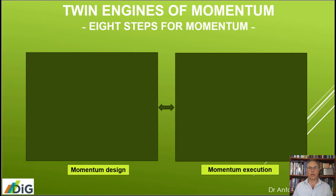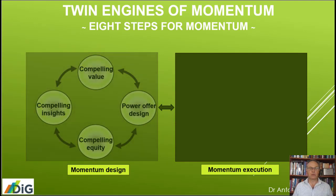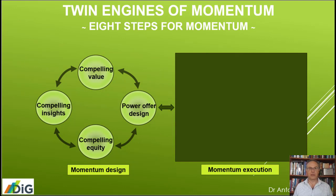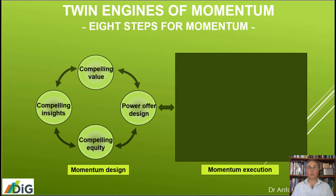Remember, we had these twin engines of growth: design and execution. First, we need to understand compelling insights — what really drives the thinking, what are the deep motivations of our customers and stakeholders, because emotions are important. Social components of our lives are important in making decisions that otherwise have a rational component. We can understand where compelling value is if we have deep motivations and know what is important to our customers, whether these customers can provide strong, high profits for us.